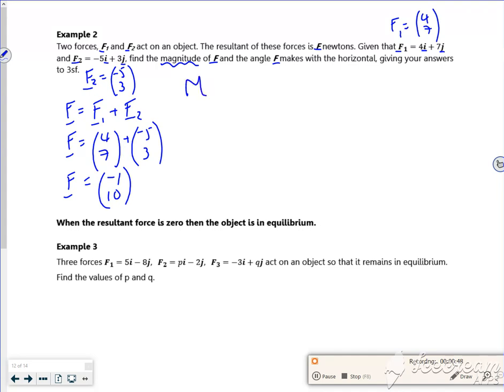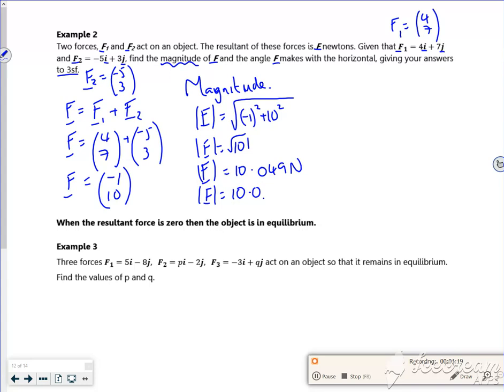So then the magnitude, which is its length. It will be √((-1)² + 10²), which is √101. They left it as √101. So we've got it as 10.049 newtons. Three sig figs, 10.0. So the resultant force is 10.0 newtons to three sig figs.